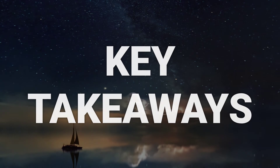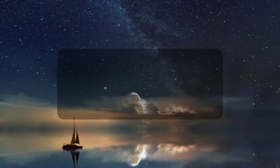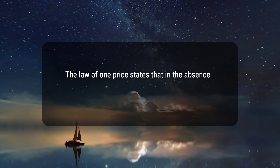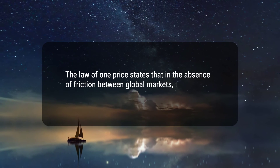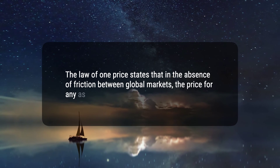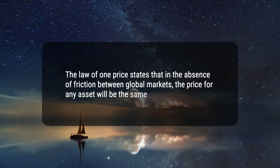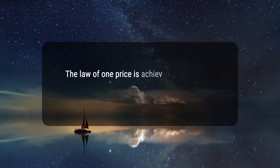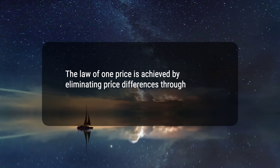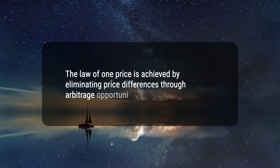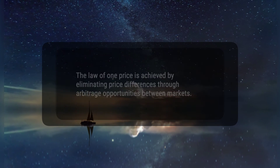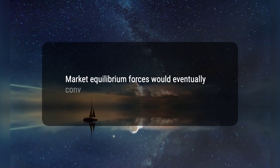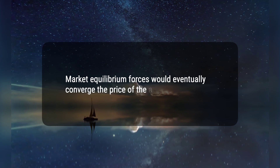Here are three key takeaways. 1. The Law of One Price states that in the absence of friction between global markets, the price for any asset will be the same. 2. The Law of One Price is achieved by eliminating price differences through arbitrage opportunities between markets. 3. Market equilibrium forces would eventually converge the price of the asset.